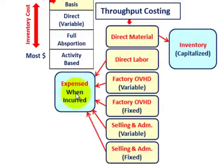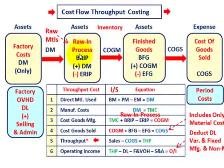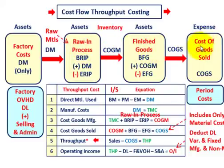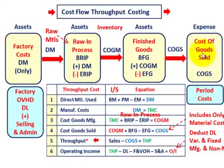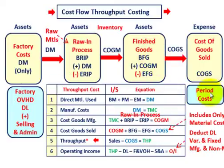Everything else gets expensed for the period when it's incurred. For the cost flow, factory costs flow into raw and in-process inventory, then finished goods, and then cost of goods sold. From factory cost through all inventories, they're an asset. When we get to cost of goods sold, that's expensed against sales. All other costs — direct labor, variable and fixed overhead, selling and administrative — those are period costs expensed for the period, not included in inventory.